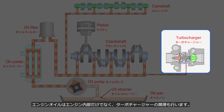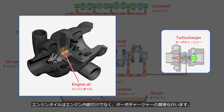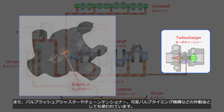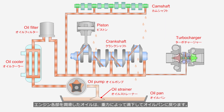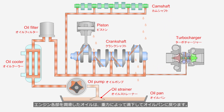Engine oil not only lubricates the internal components of the engine but also provides lubrication for the turbocharger. Additionally, it is used as hydraulic fluid for operating components such as valve lash adjusters, chain tensioners, and variable valve timing mechanisms. The oil that has lubricated engine components drips down by gravity and returns to the oil pan.